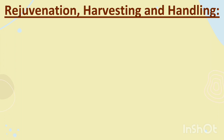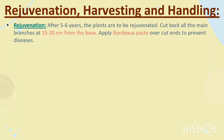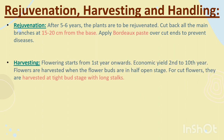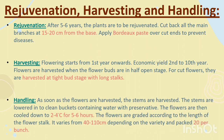Rejuvenation and Harvesting. Rejuvenation: after 5–6 years, the plants are to be rejuvenated. Cut back all the main branches at 15–20 cm from the base. Apply Bordeaux paste over cut ends to prevent diseases. Harvesting: flowering starts from the 1st year onwards; the economic period is from the 2nd to 10th year. Flowers are harvested when the flower buds are in half-open stage. For cut flowers, they are harvested at the tight bud stage with long stalks. Handling: as soon as flowers are harvested, the stems are placed in clean buckets containing water with preservatives. The flowers are cooled to 2–4 degrees Celsius for 5–6 hours, then graded according to stem length, which varies from 40–110 cm depending on variety, and packed 20 per bunch.